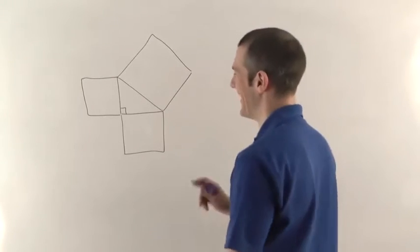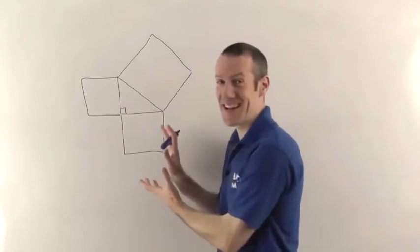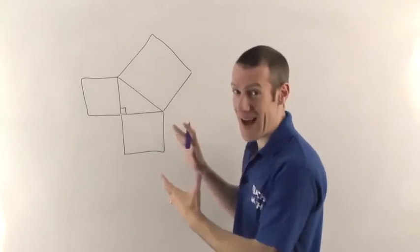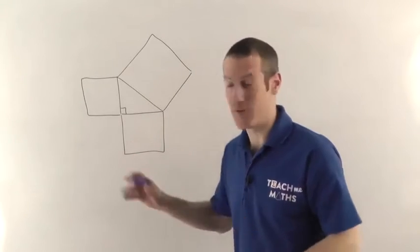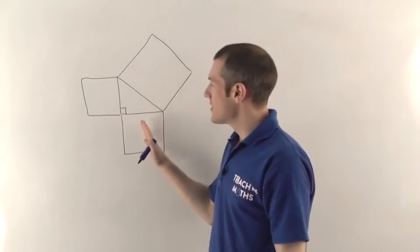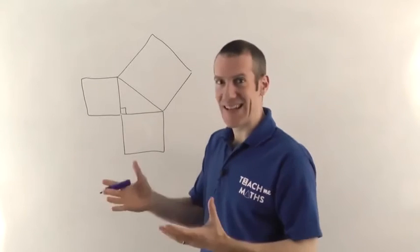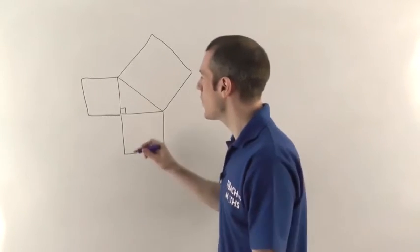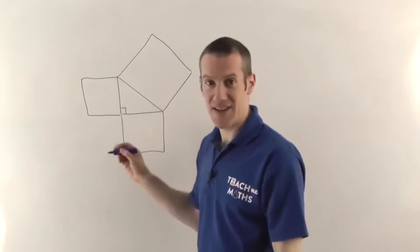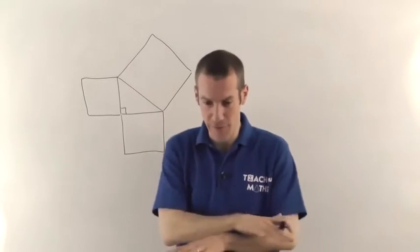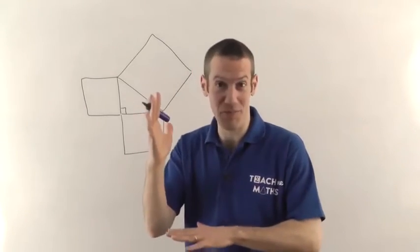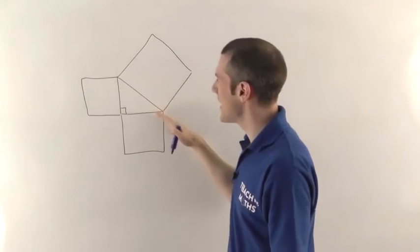Yeah, and actually this does turn out to be very useful. I know it might seem a bit abstract and well what's that good for? There's a lot of times, particularly when you're building things, so engineers would use this all the time, when you've got two lines that are right angles to each other. For example, the floor and the wall of your building will always be at right angles and you want to build something that's at a slope.